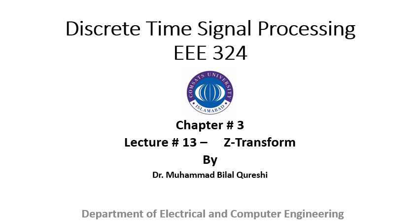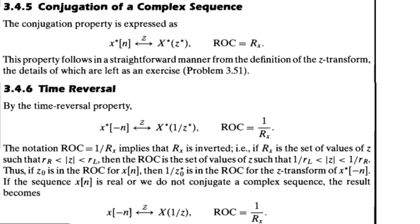Let's get started. In the conjugation property of a complex sequence, if your sequence is conjugated the Z-transform will be conjugated and the ROC will remain the same. So in the conjugation property, whenever the x(n) signal is conjugated, the Z-transform will be conjugated, however there will be no change on the region of convergence.